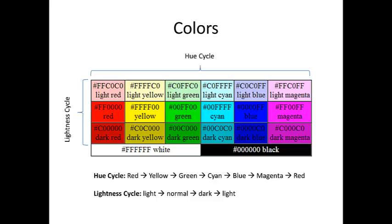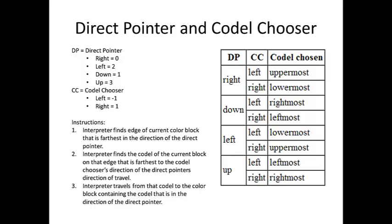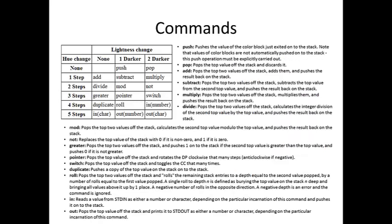Now that we have gone over the color sequences, we are going to move on to how the code is evaluated. The PEAT interpreter begins executing the program with the color block in the upper left corner of the program. The interpreter maintains the direct pointer, abbreviated DP, and the CODAL chooser, abbreviated CC. The direct pointer initially points to the right, but is also able to point left, down, or up. The CODAL chooser initially points to the left, but is also able to point to the right. Commands are defined by transitioning from one color block to another. The number of steps in the hue cycle and lightness cycle in the transition from one color to the next determines what command is executed.